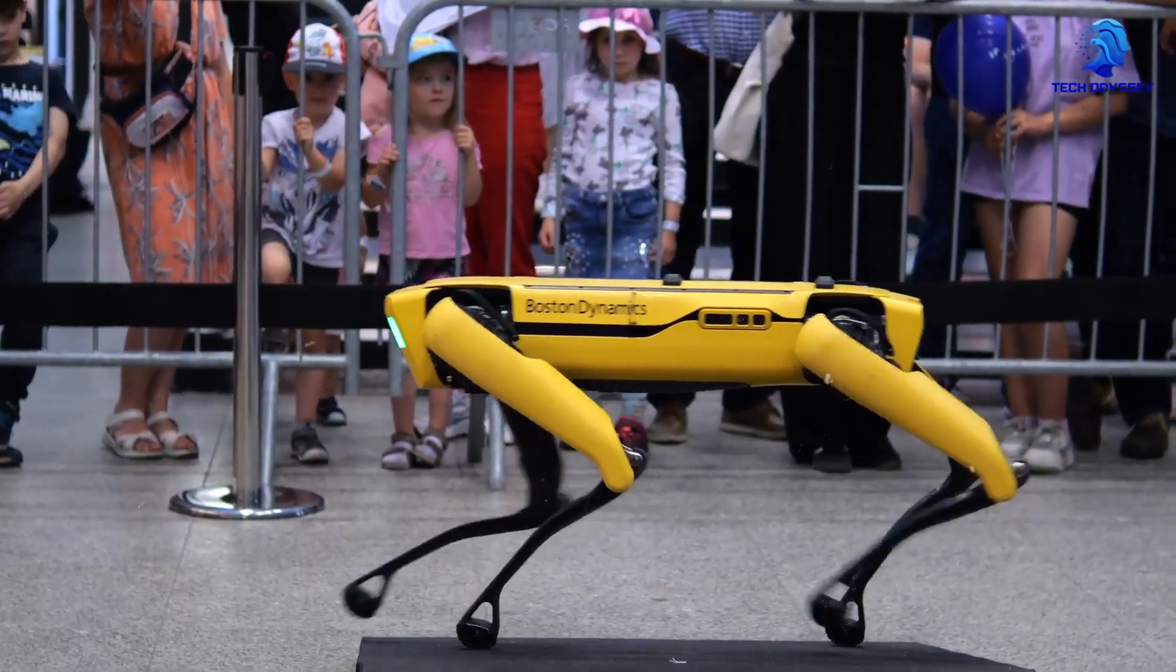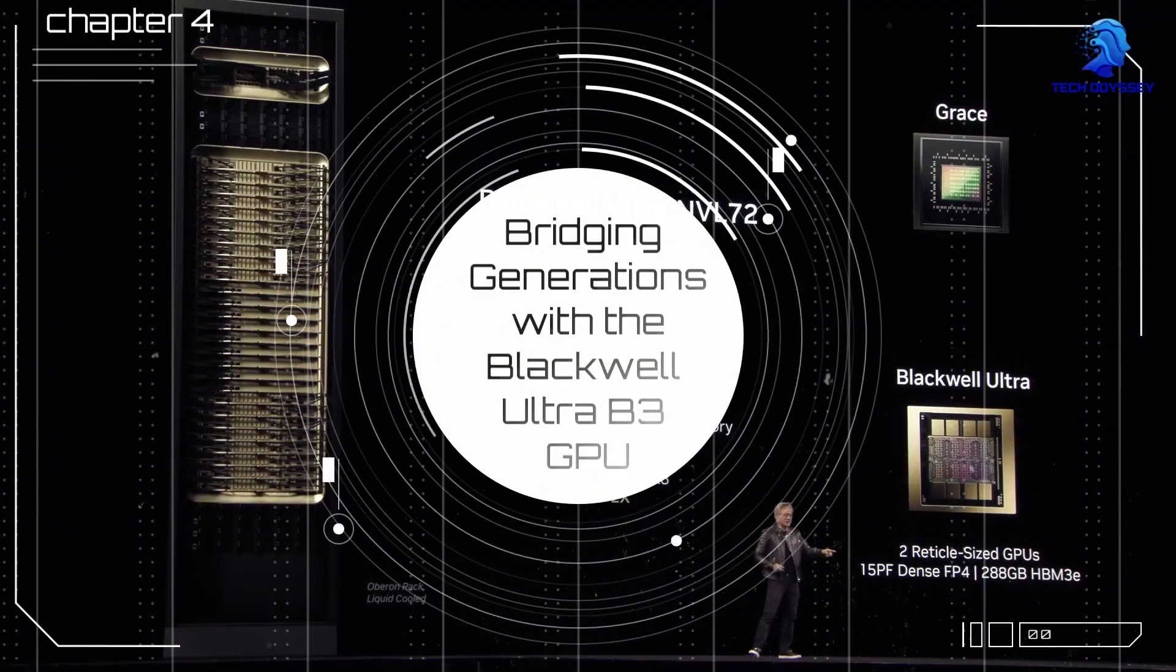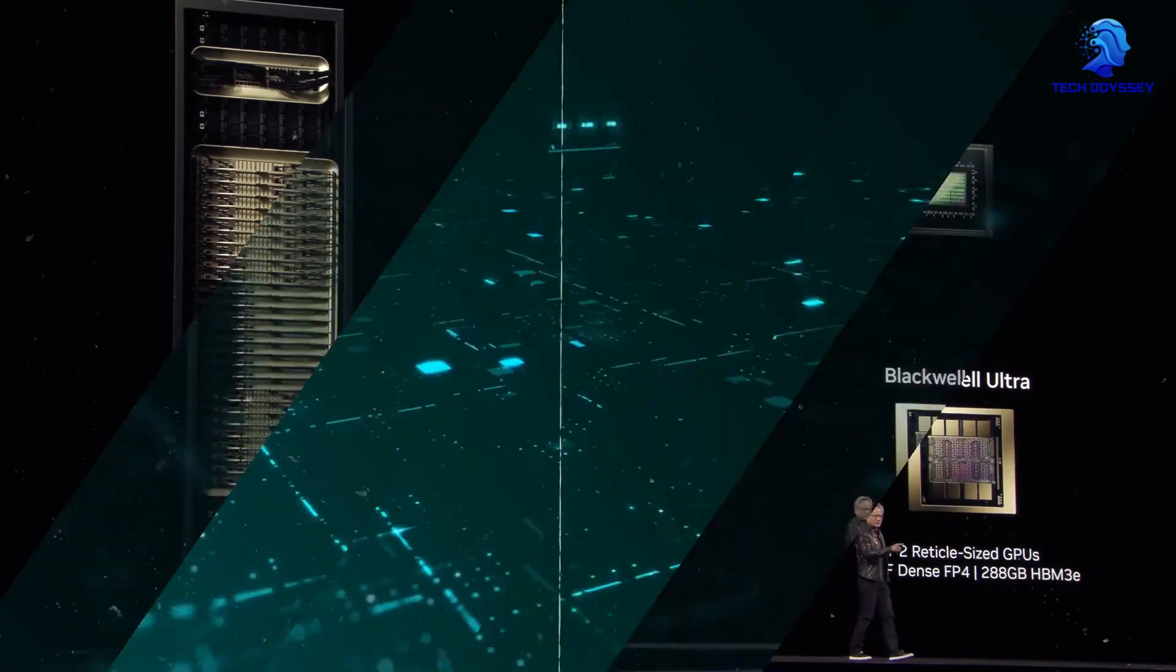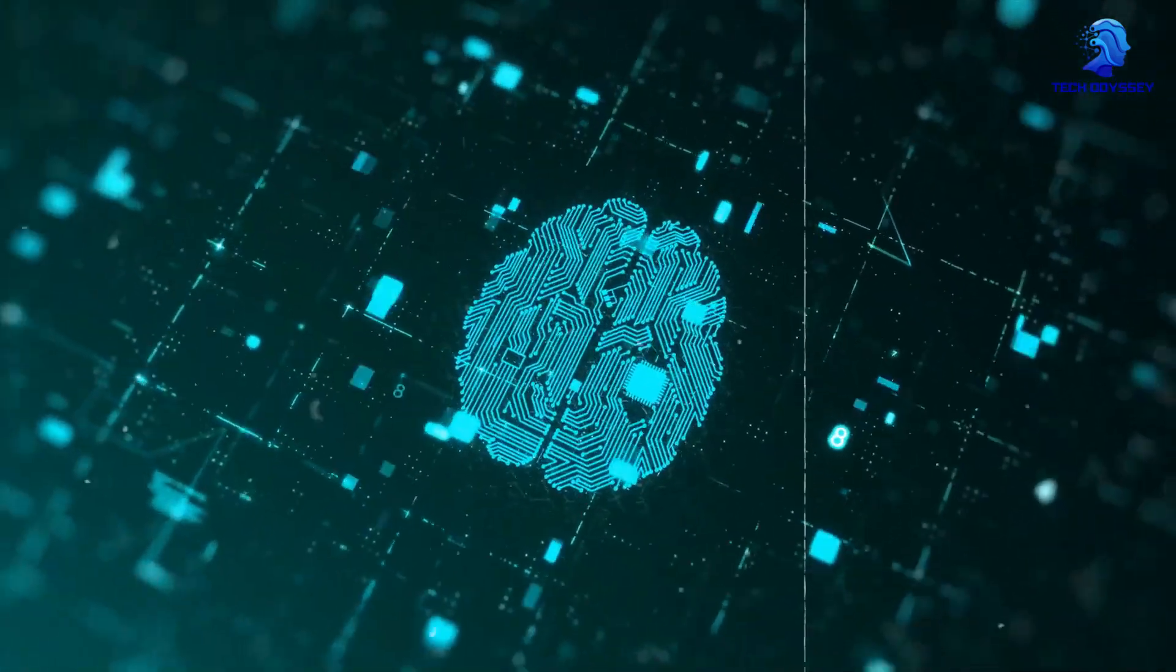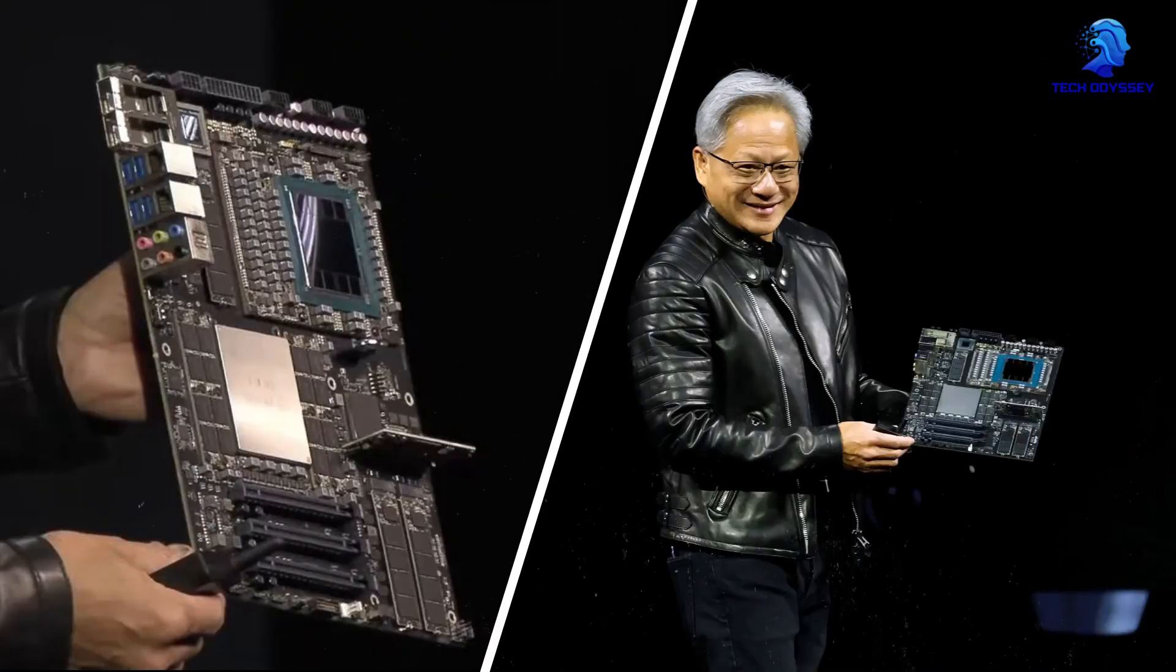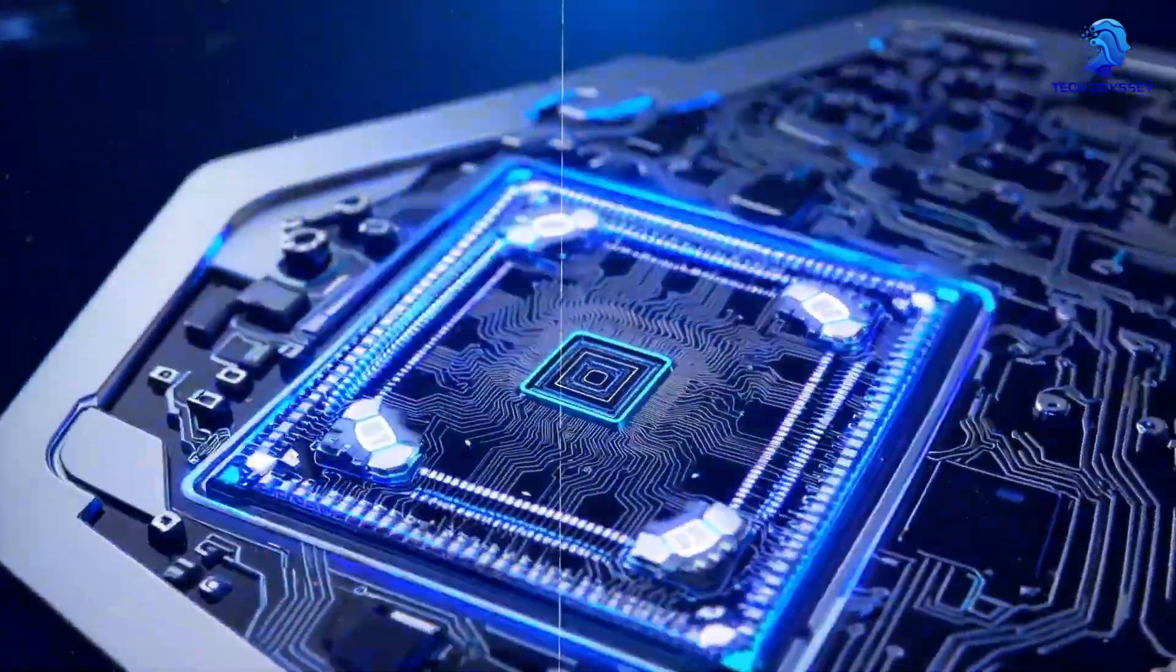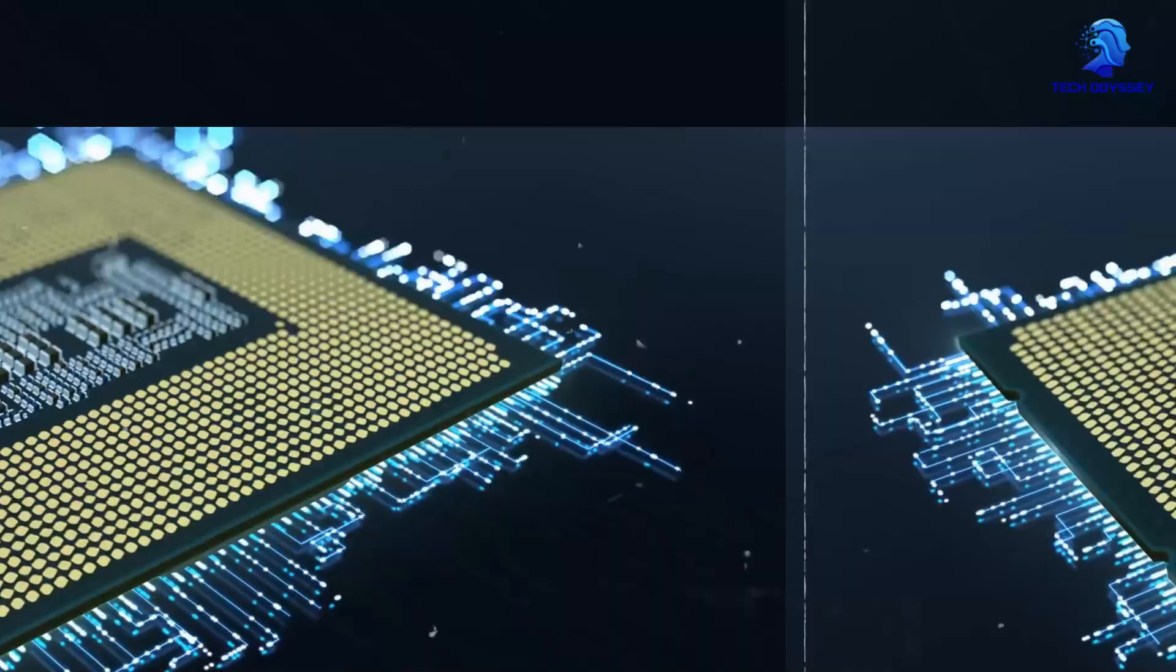Chapter 4: Bridging Generations with the Blackwell Ultra B3 GPU. As we transition from the cutting-edge Rubin Ultra to a more immediate solution, let's look at the Blackwell Ultra B3 GPU. This chip is a critical bridge between current technology and next-gen hardware.